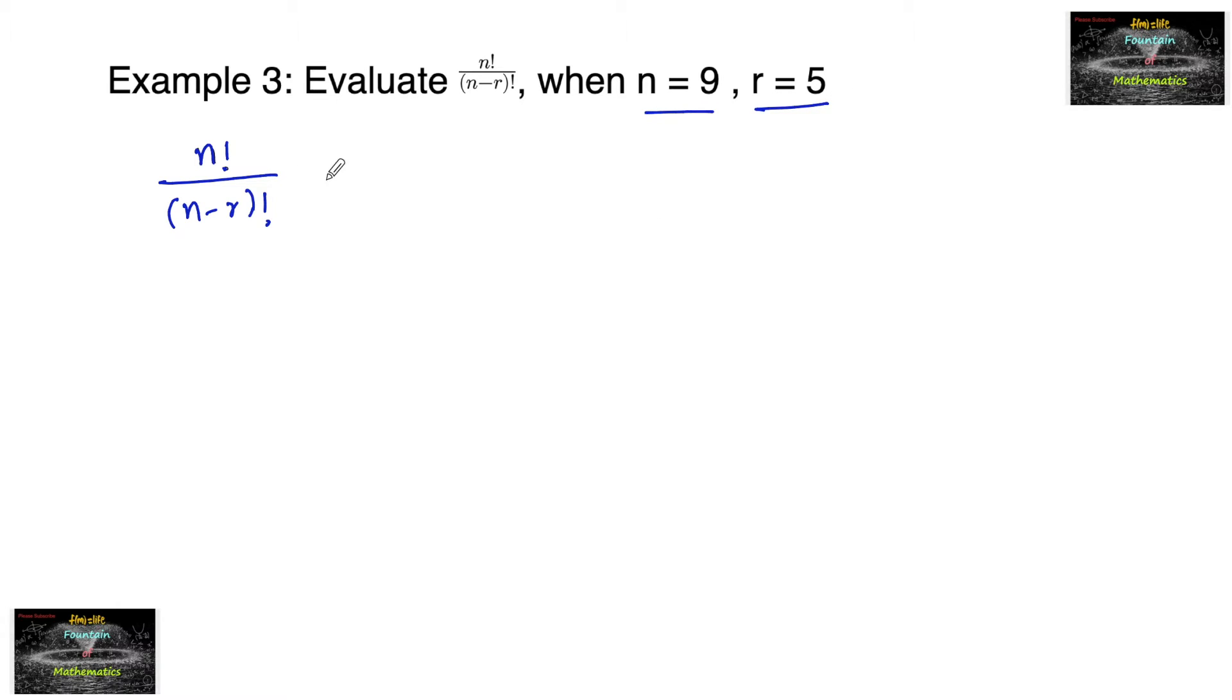Let's use the factorials. 9 factorial upon n minus r, that is 9 minus 5 factorial, which equals 9 factorial upon 4 factorial.